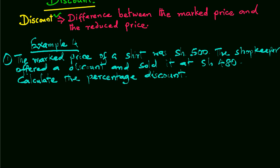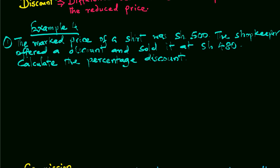In our example, the marked price of a shirt was 500 shillings. The shopkeeper offered a discount and sold it at 480 shillings. Calculate the percentage discount. So in this case, we have the discount which is 500 minus 480.